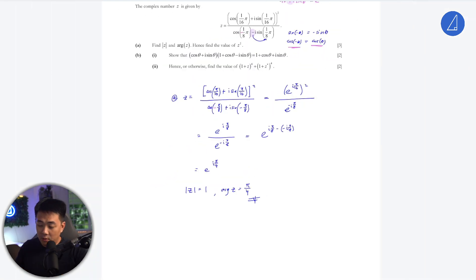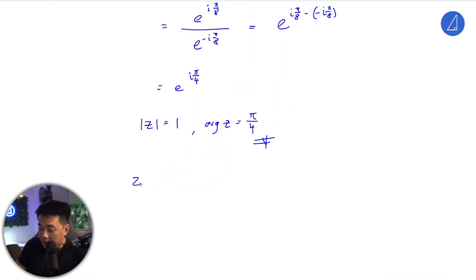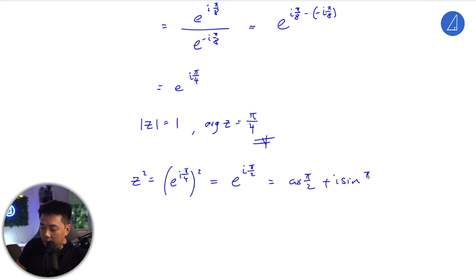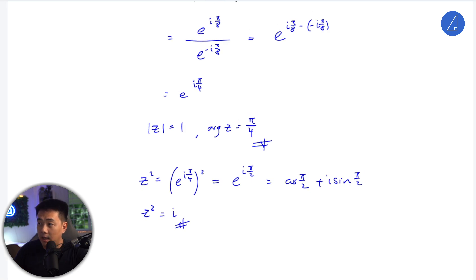To find z² is quite straightforward. z² = (e^(iπ/4))² = e^(iπ/2). Now π/2 is the special angle 90°. This is just i. If not, you could use cosine(π/2) + i sin(π/2): cosine(π/2) = 0, sine(π/2) = 1, so z² = i.